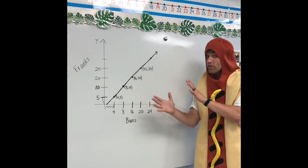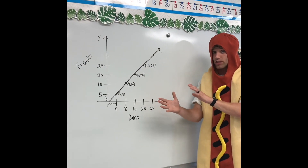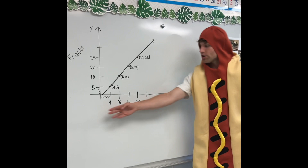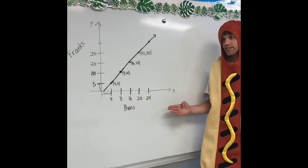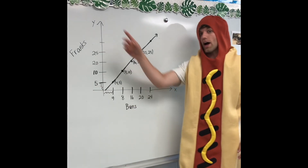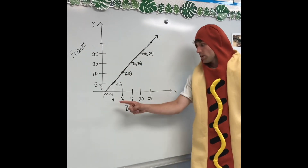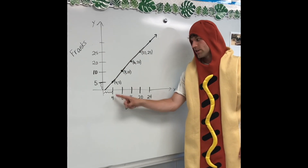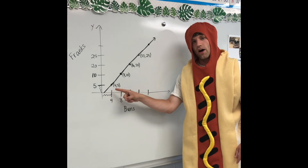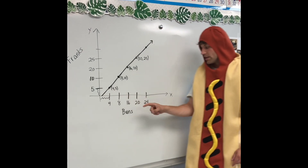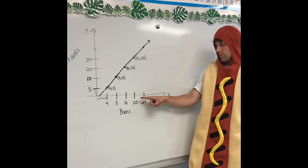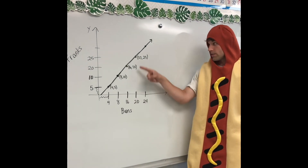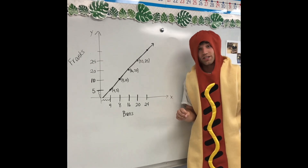First our x-axis, then our y. So when we have 4 hotdog buns, we have 5 Franks. Continuing on, we have 20 hotdog buns, we have 25 Franks.